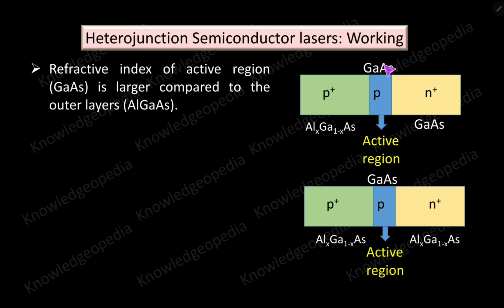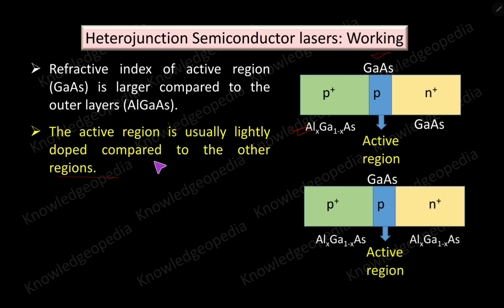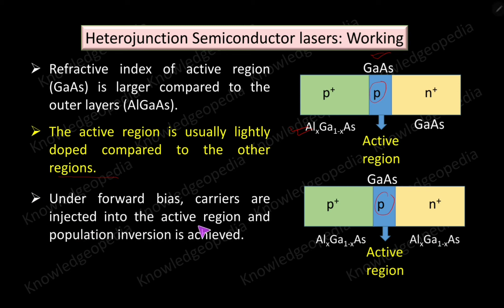In the case of double heterojunction, the refractive index of the active region is higher compared to both sides, since both sides have aluminum gallium arsenide. Further, as discussed previously, the active region is lightly doped compared to the other regions — that is why the active region is labeled P while the others are P-plus and N-plus. Under forward bias, carriers are injected into the active region, causing population inversion. The P-side is connected to the positive terminal and the N-side to the negative terminal of the applied source.